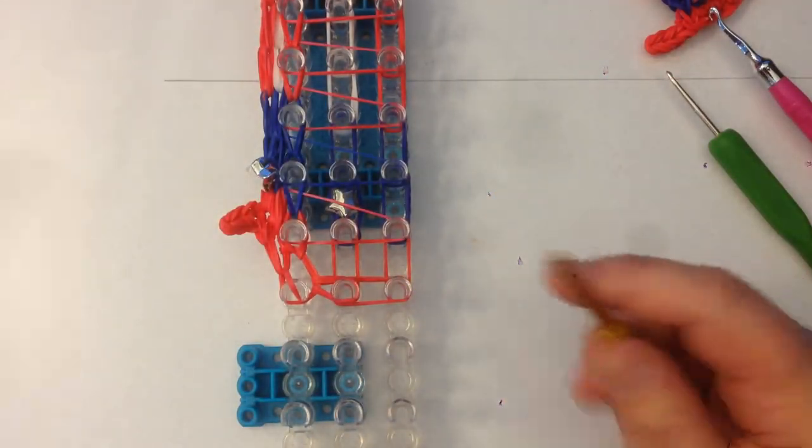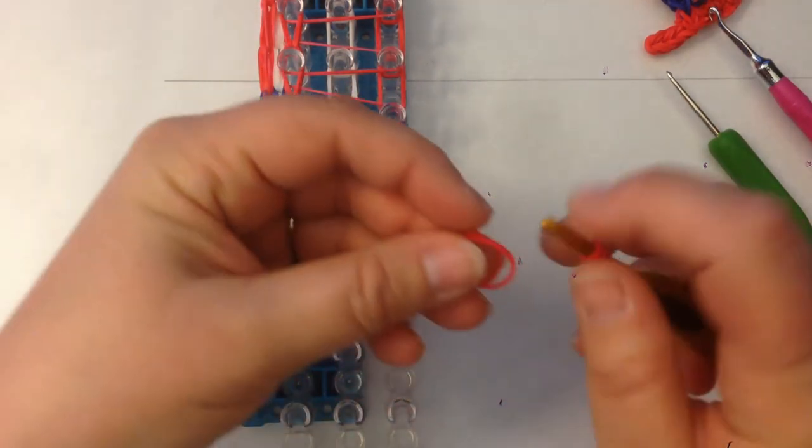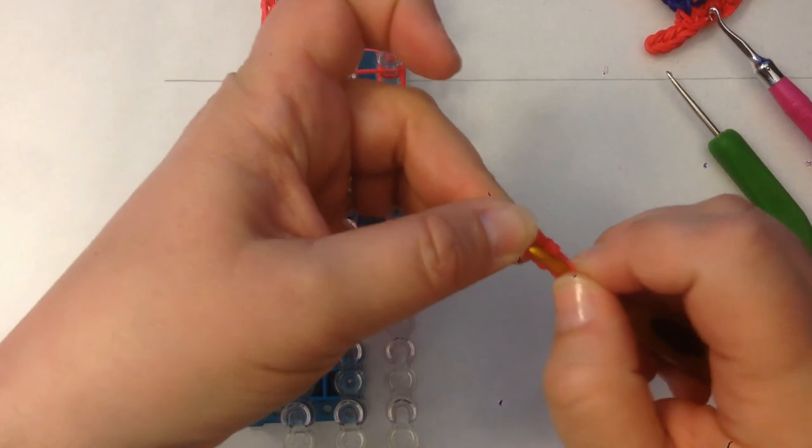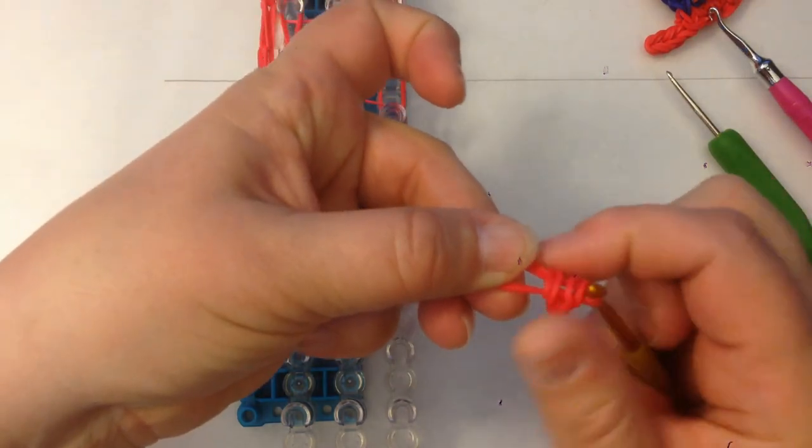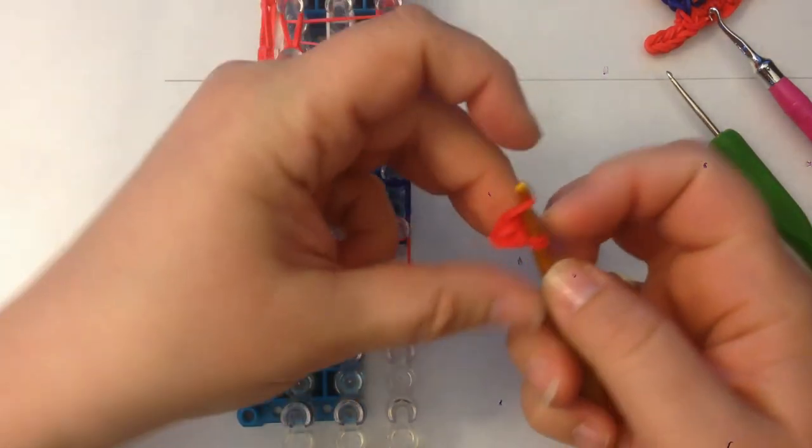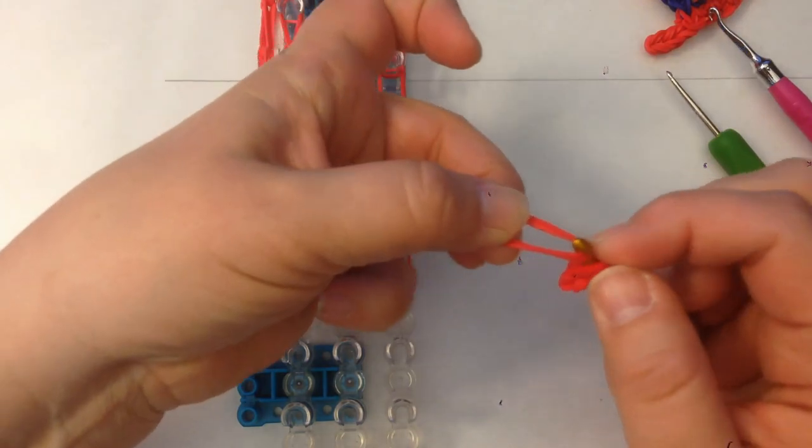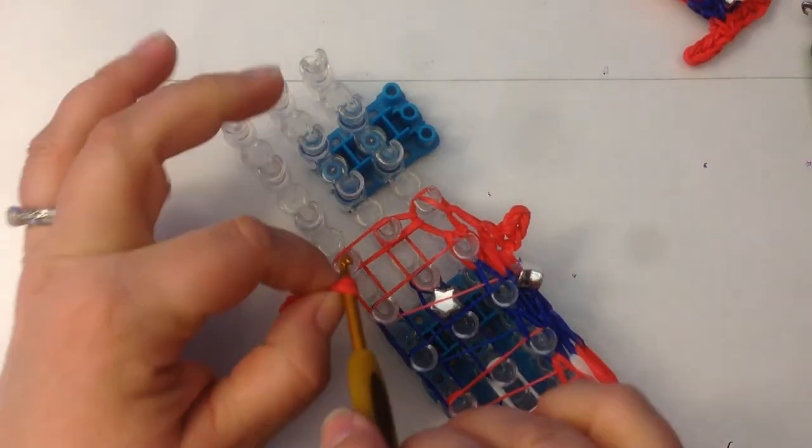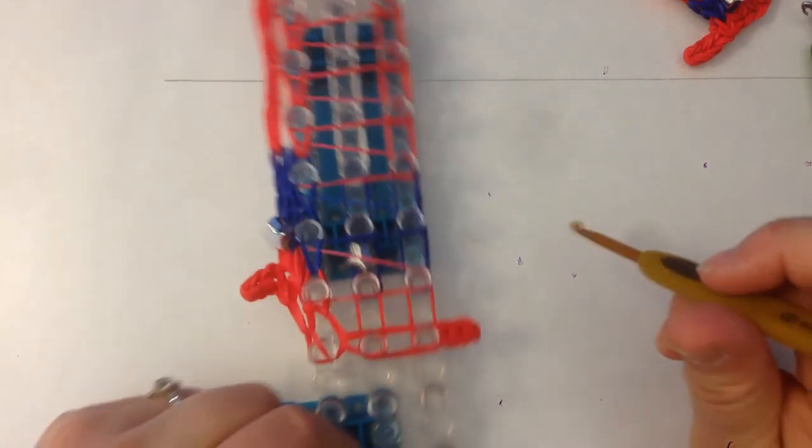We also need to put the other side of the brim of his hat on. So taking a single band, wrap it once and twice. Take a pair of bands and slide these onto it. Reclaim the end of your bands so that it's all sitting on your hook. Take another pair, slide all of that onto that band and reclaim. And one more time. Slide it all on and reclaim. And that is going to go just there.